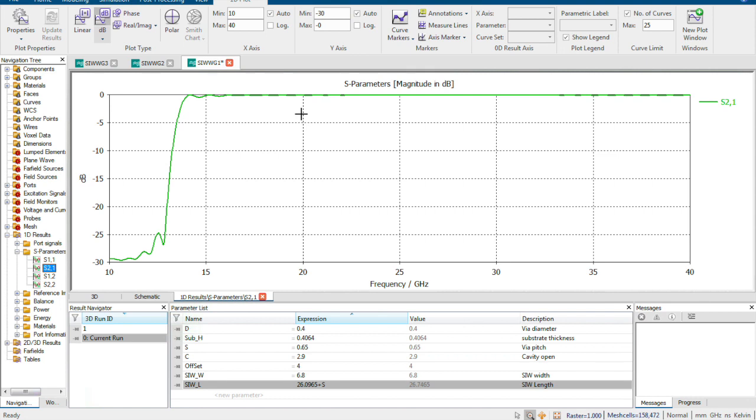And for the transmission coefficient, we can see that it is close to 0 dB, so it is a really good waveguide. As I said, the waveguide diameter and the pitch are two key parameters we need to consider when we try to design the SIW.